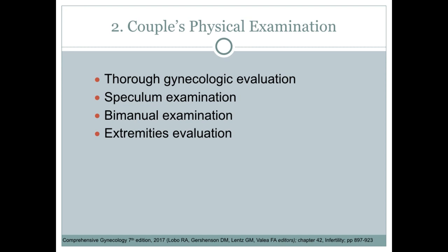We also assess for defects such as absence of vagina and uterus and a vaginal septum. For the extremities, we exclude malformations such as shortness of the fourth finger or cubitus valgus, which you know is part of Turner syndrome and other congenital defects.